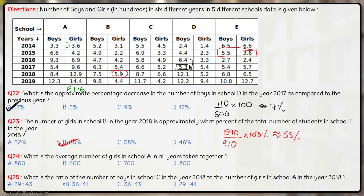The total number of girls will be 51.6 × 100 = 5160, and since we have to calculate the average we divide by 6. This comes out to be 860. So the average number of girls in school A is 860, which is Option A.